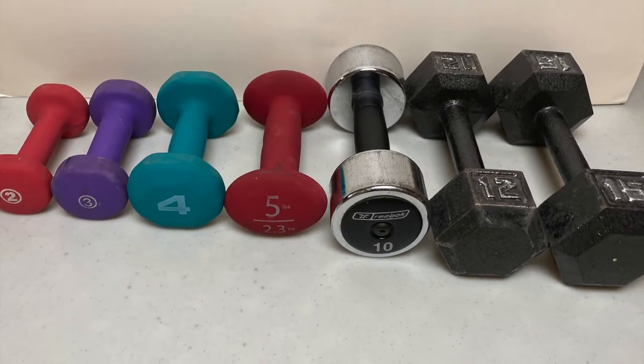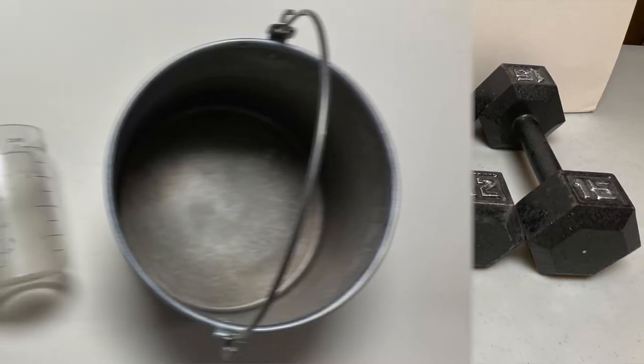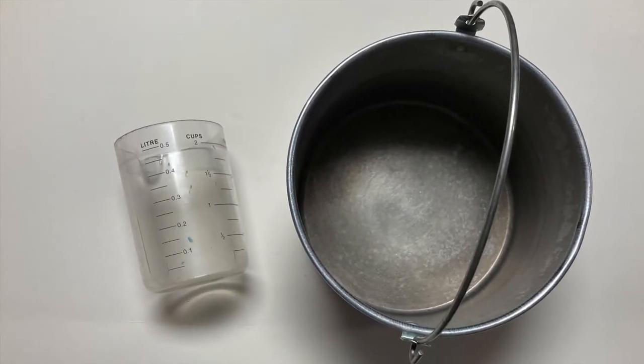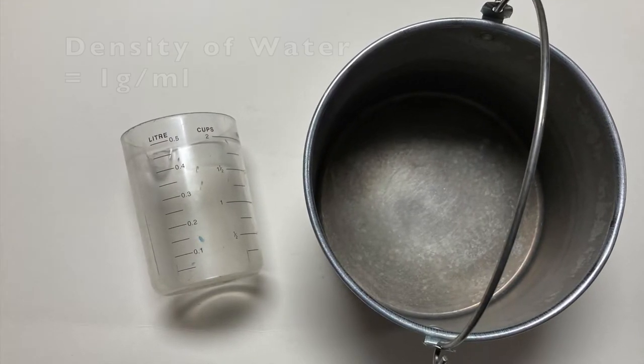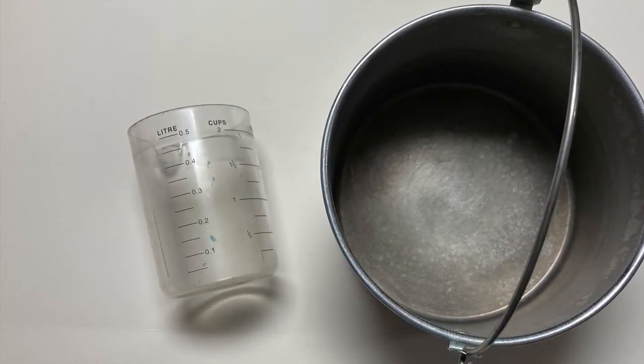For this experiment, you're going to need an assortment of different weights. If you don't have that, you can use a bucket and add various quantities of water to it with a measuring cup. Then you can determine the weight by multiplying the density of water by the volume of water, or just weigh it on a scale.